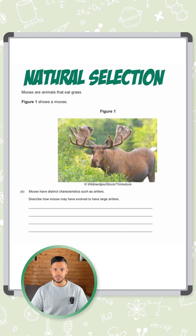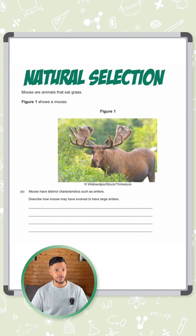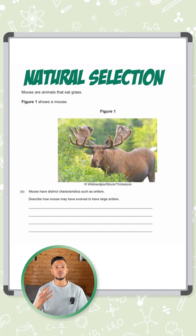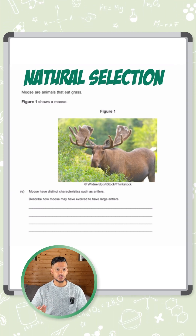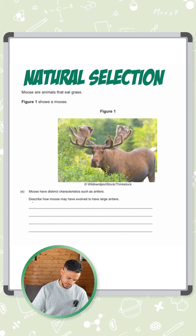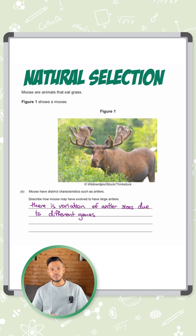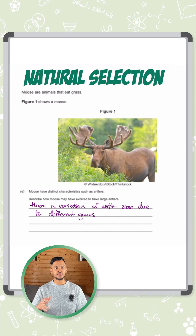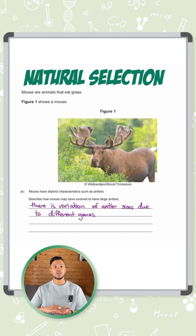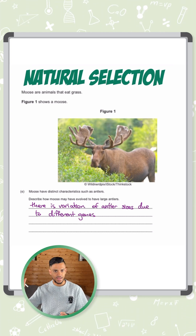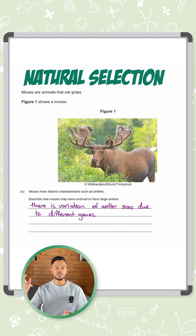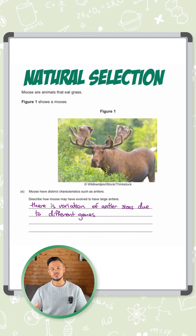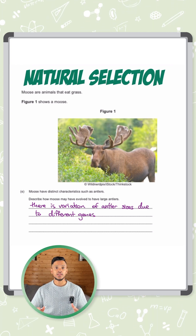So how did they get it in the first place? It's all to do with variation. Variation occurs because they all have different genes which get passed on. So there is a variation of antler sizes due to different genes — some of these moose will have really big antlers, some will have small antlers, and that's just due to natural variation.